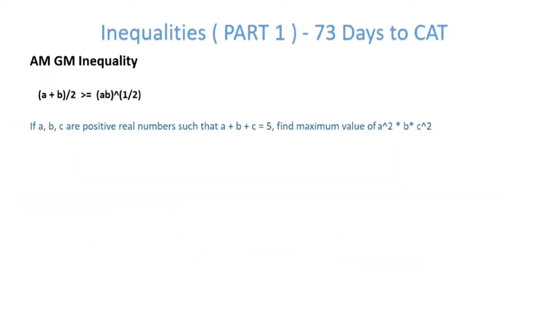Another very important inequality from CAT standpoint is AM-GM inequality which is arithmetic mean and geometric mean. So for two numbers, a plus b by 2 is greater than equal to root over ab. So arithmetic mean must be greater than equal to geometric mean.